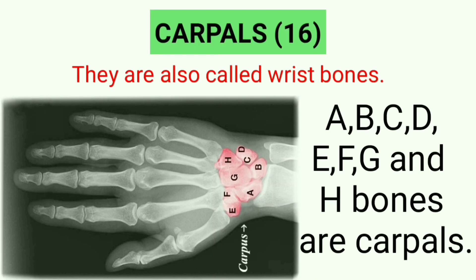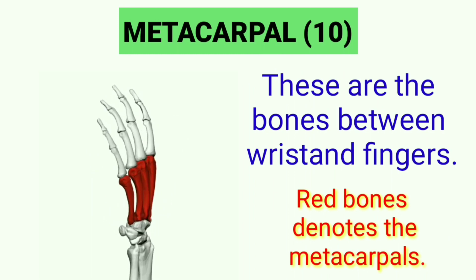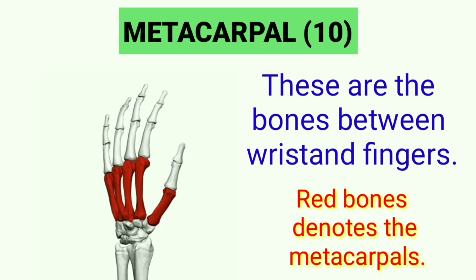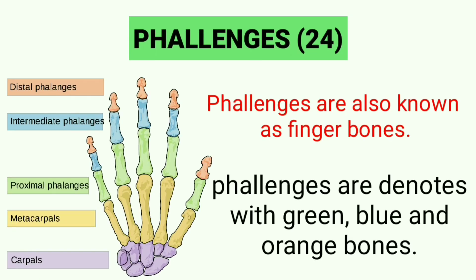Carpals — there are 16 in number; these are the bones of the wrist. The wrist is composed of 8 carpal bones arranged in 2 rows of 4. Metacarpals — they are 10 in number; these long bones make up the palm of the hand. Phalanges — their quantity is 28; these are the bones of the fingers — 3 in each finger and 2 in each thumb.